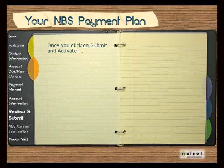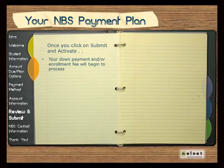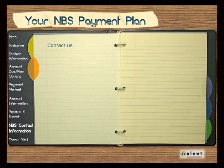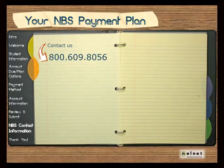After selecting the Submit and Activate button, NBS will begin to process your down payment and or enrollment fee if applicable. NBS cannot stop the down payment and or enrollment fee from processing. NBS is also unable to change the bank account or credit card that will be used for the down payment. If at any time while setting up the NBS automatic payment plan you have questions or concerns, please stop and call NBS at 800-609-8056 for assistance. Once again, our phone number is 800-609-8056.